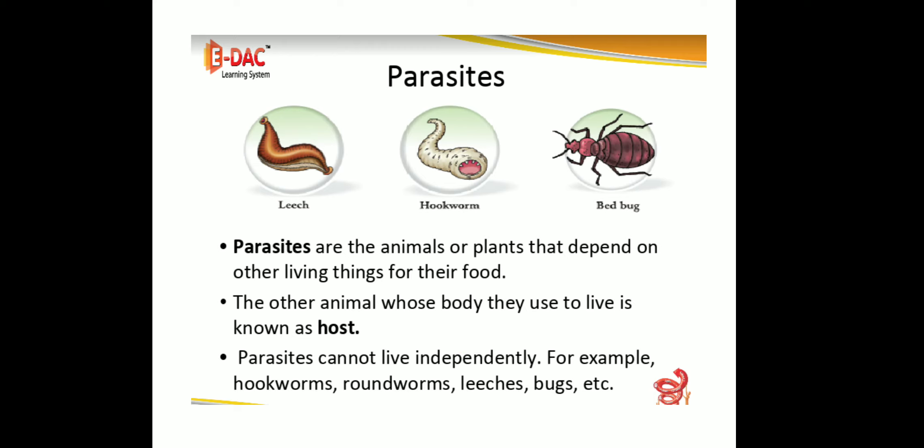Next, we are going to see about parasites. Listen: parasites are animals or plants that depend on other living things for their food. The other animal whose body they use to live is known as the host. Parasites cannot live independently. For example, hookworms, roundworms, leeches, etc.